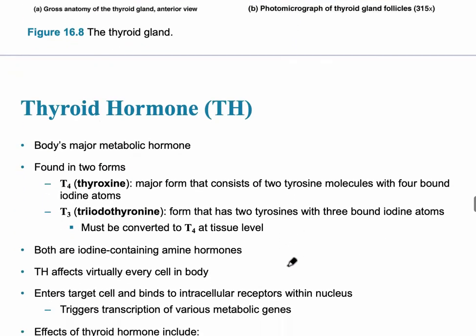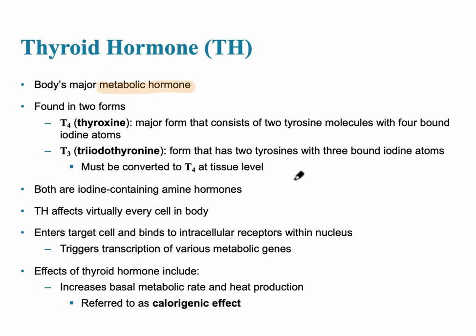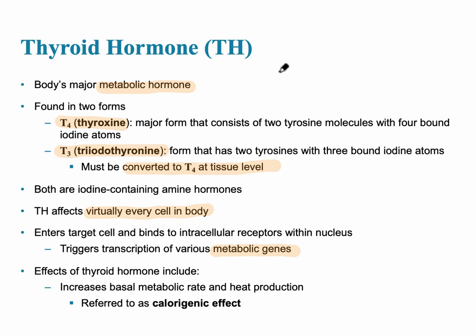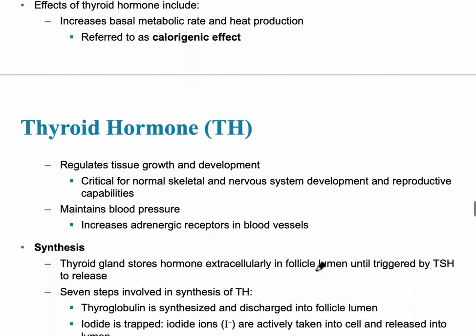Thyroid hormone's major effect is metabolism — it is the major metabolic hormone in the body. It exists in two forms: thyroxine (T4), the major form, and triiodothyronine (T3), which has two tyrosines and three bound iodine atoms. T4 must be converted to T3 at the tissue level. Importantly, even though thyroid hormone is amino acid-based, it behaves like a steroid hormone — it does not use a second messenger system and goes directly through membranes to affect genes.